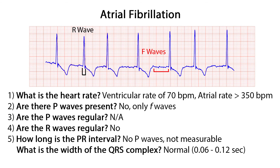Now we'll use the 5-step approach to evaluate atrial fibrillation. Step 1: What is the heart rate? Counting the R waves, or QRS complexes, in 6 seconds, there are 7 — so 7 times 10 equals a ventricular rate of 70 beats per minute. Step 2: Are there P waves present? No, only fibrillatory f waves. The atrial rate is impossible to determine but is very fast, most certainly greater than 350 beats per minute. Step 3: Are the P waves regular? There are no P waves, so this doesn't apply. Step 4: Are the R waves regular? The QRS complexes, or R waves, occur at irregular intervals. Step 5: How long is the PR interval? Since there are no P waves, it is not measurable. What is the width of the QRS complex? They are all normal, falling between 0.06 to 0.12 seconds.